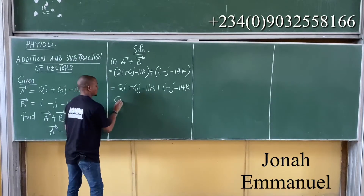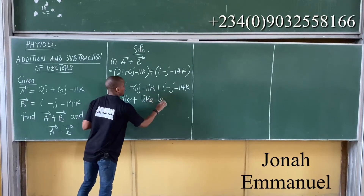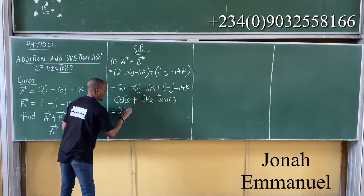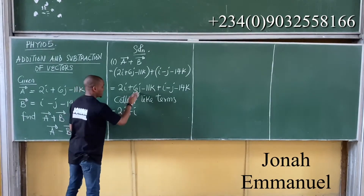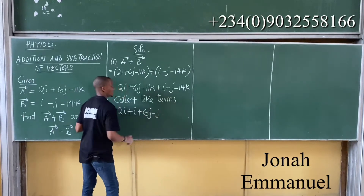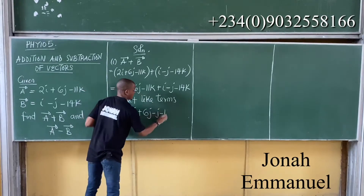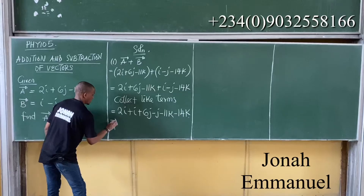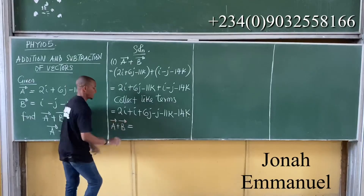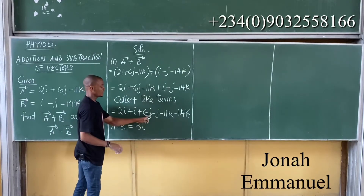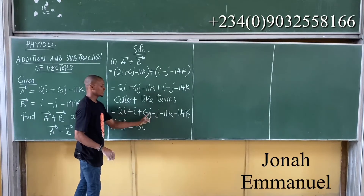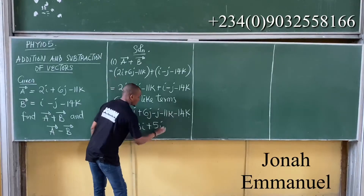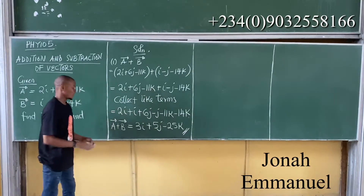Now collect like terms. Taking the i's: 2i plus i. Taking the j's: plus 6j minus j. Taking the k's: minus 11k minus 14k. Working this out: 2i plus i gives 3i. For j: 6 minus 1 is 5, so plus 5j. For k: minus 11 minus 14 is minus 25k. So A plus B equals 3i plus 5j minus 25k.